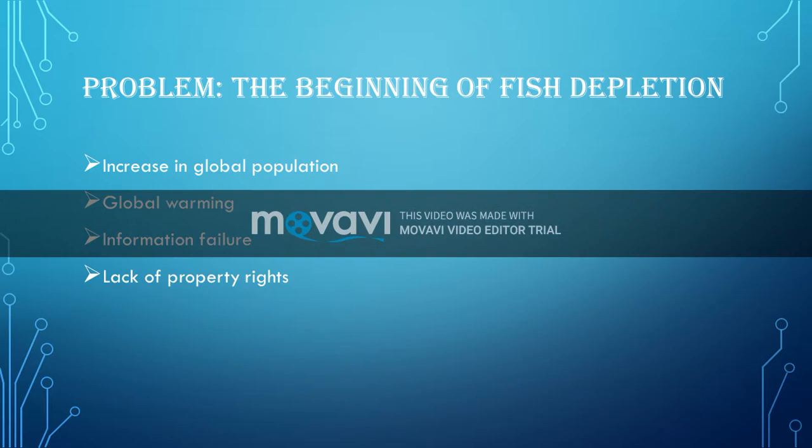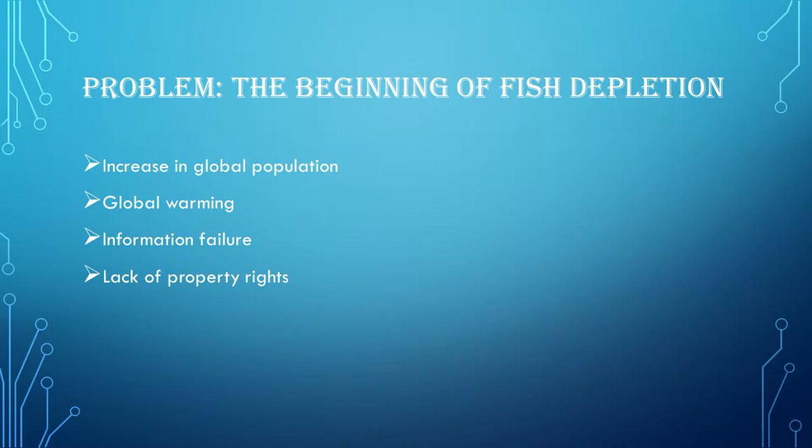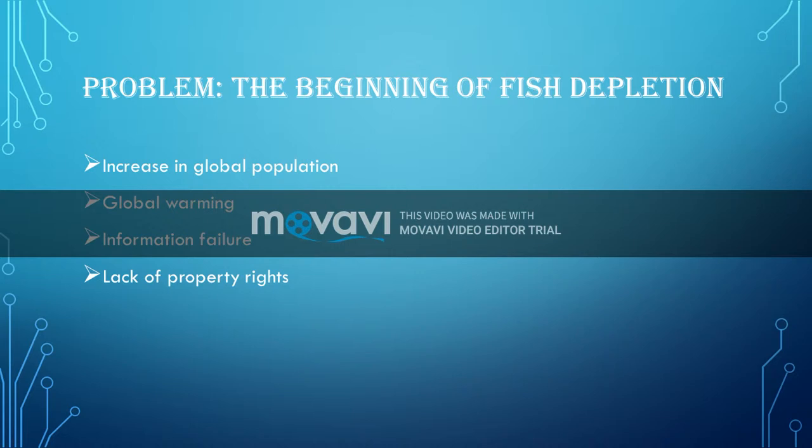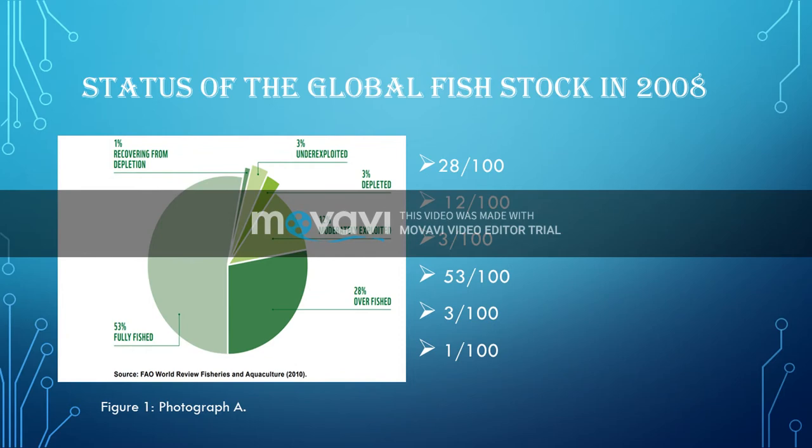Lack of property rights is another issue. Fishing is well known as a public good — one of the free goods that cannot be owned by private companies. A lack of property rights over the sea means that ownership is difficult, if not impossible, for individuals to establish.